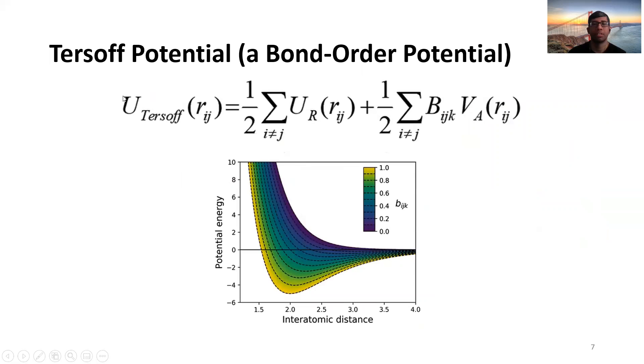So you can see the functional form here. And this is just a map like how the potential energy actually varies with respect to interatomic distance when you defer or change the bond order in the system.